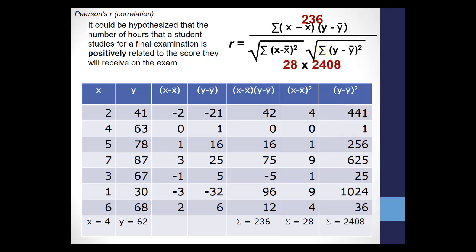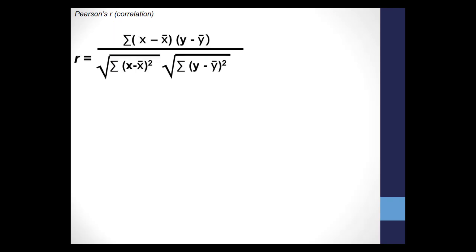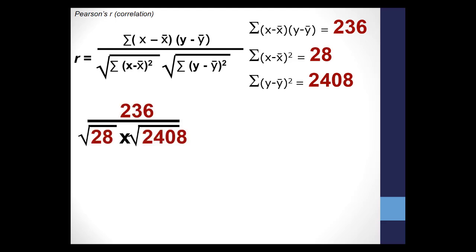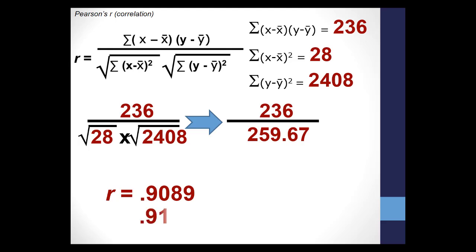Now you have all the data for the denominator, and it's time to finish off the formula. Just a review of the formula and what we've calculated. First, we have the sum of each score on the x variable minus the mean for the x group, multiplied by the sum of each score on the y variable minus the y variable's group mean, so 236. You've calculated the sum of each score minus the mean, squared for each of the two variables, x and y. Plugging that into the equation is 236 divided by the product of the square roots of 28 and 2408, which is 5.29 times 49.07 or 259.67. Reducing that down becomes 236 divided by 259.67. Finally, that tells you that r is 0.9089. We'll round it to 0.91.